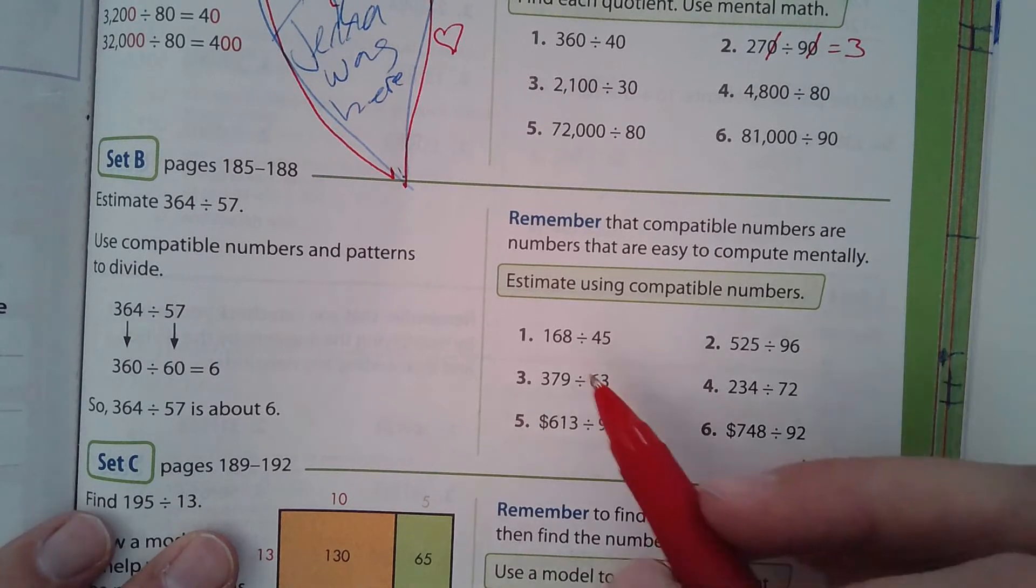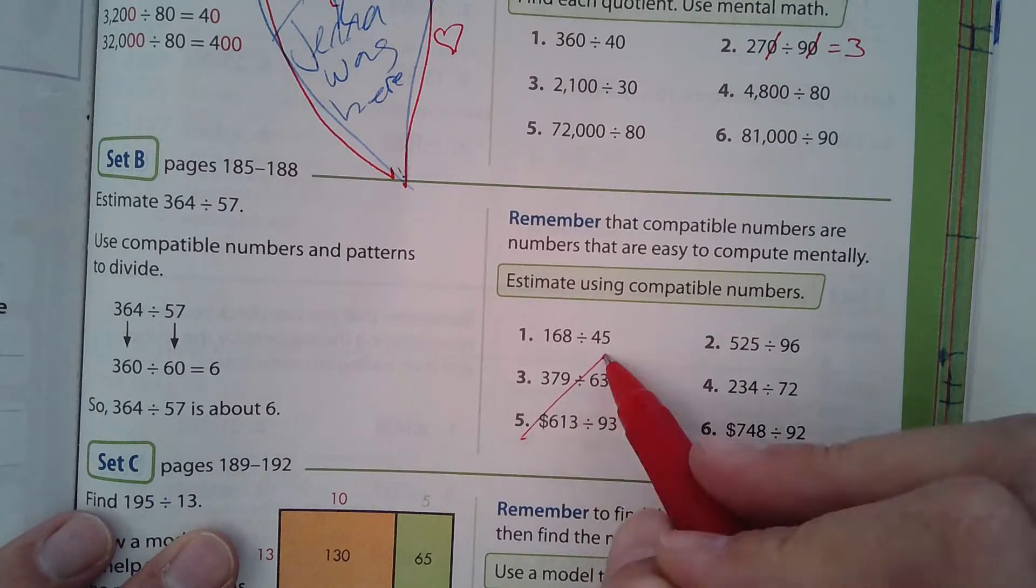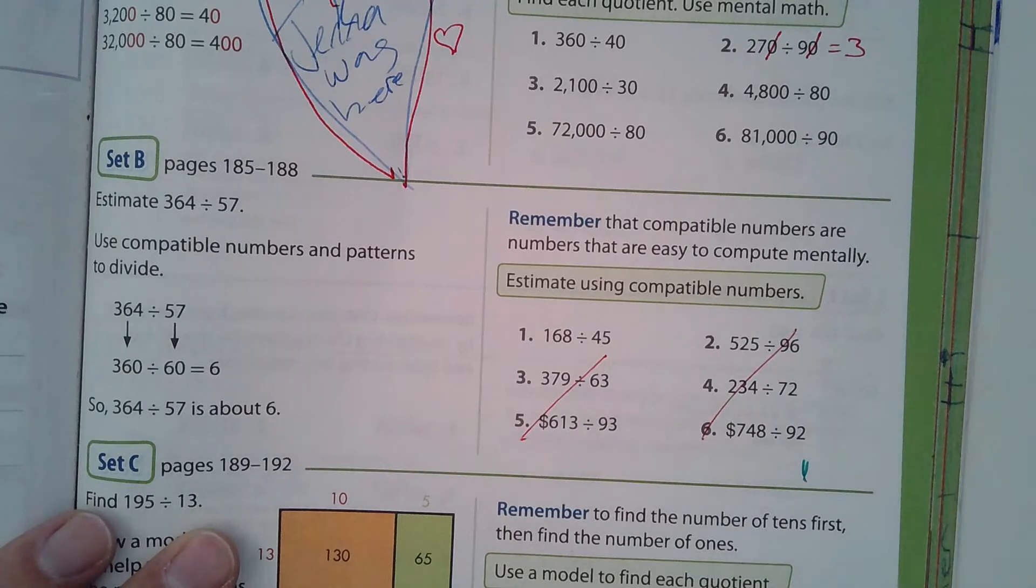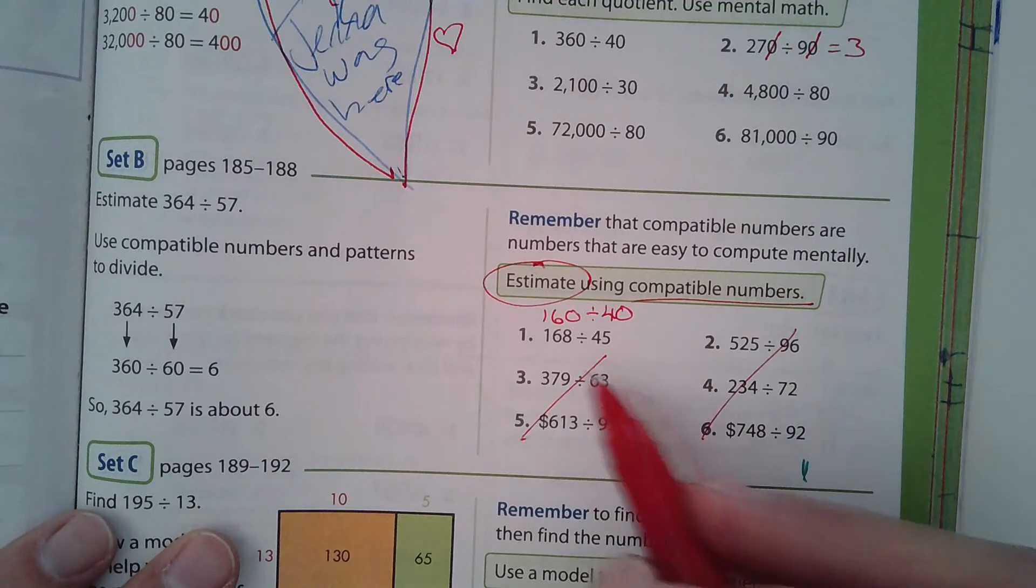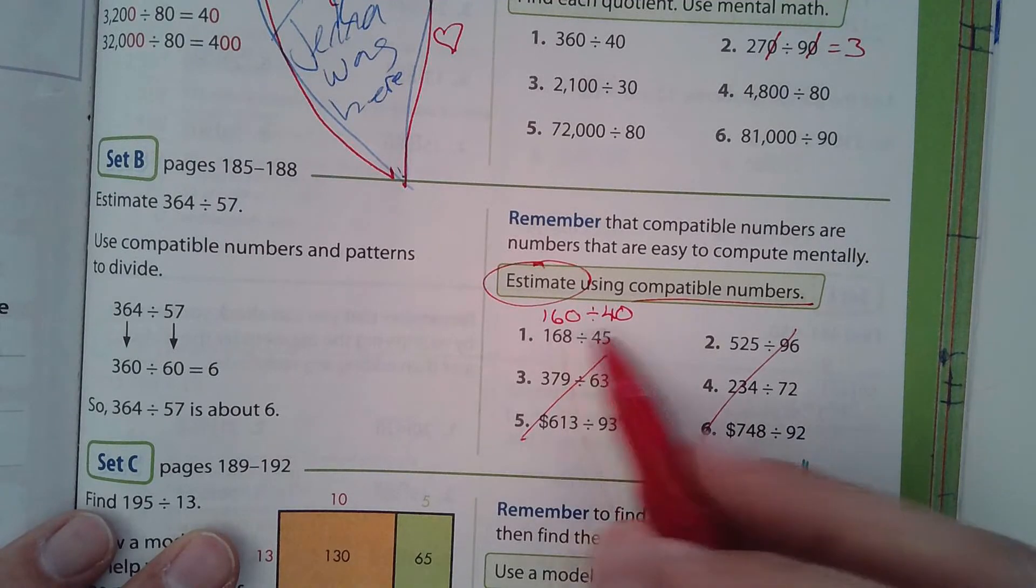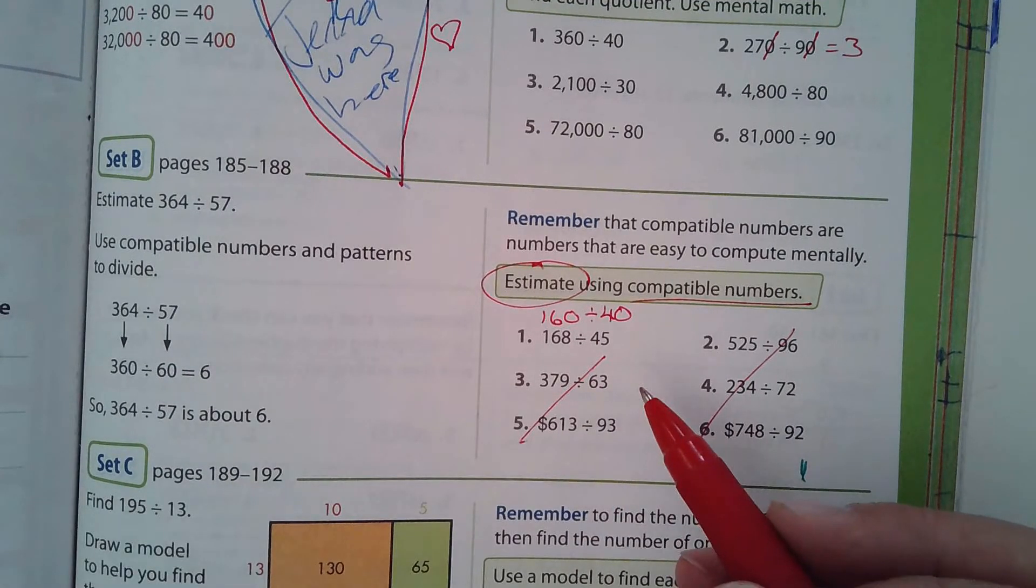So remember, when we eliminate zeros, if they're all crossed out, whatever answer you have is the correct answer. If there was a zero left over, then we would add a zero to our answer. So there's number two done for you.